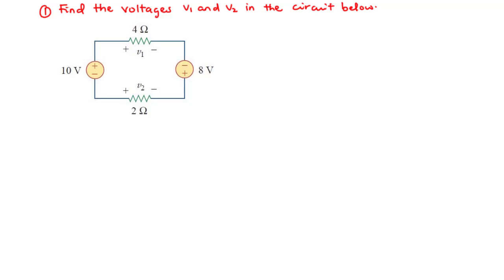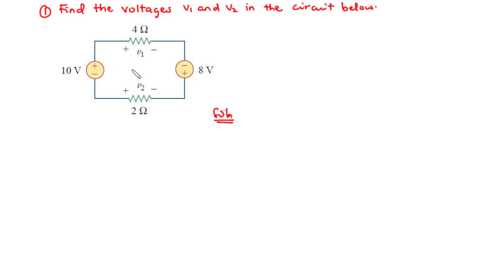Let's take our first question. We are going to find the voltages v1 and v2 in the circuit below. To solve this problem, we are going to apply KVL. According to KVL, the algebraic sum of all voltages around the loop should be equal to zero. We are going to take the clockwise direction.